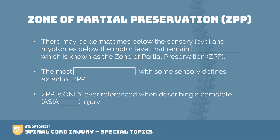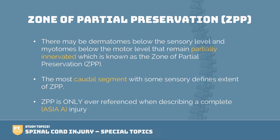The zone of partial preservation is a very interesting concept within the ASIA scale. There may be a dermatome area below the sensory level and myotomes below the motor level that remain partially innervated — this is known as a zone of partial preservation. It is defined as the most caudal segment with some sensory function, and it defines the extent of that zone of partial preservation.